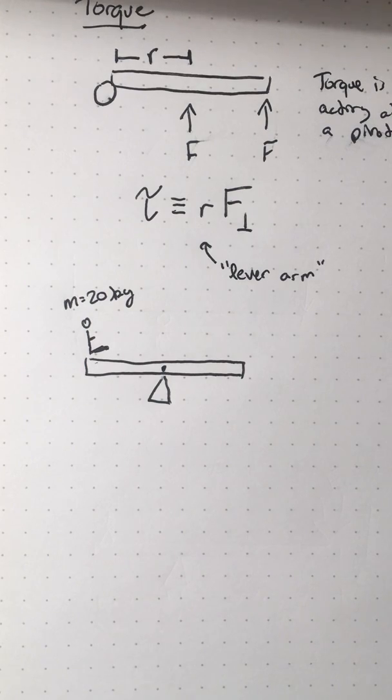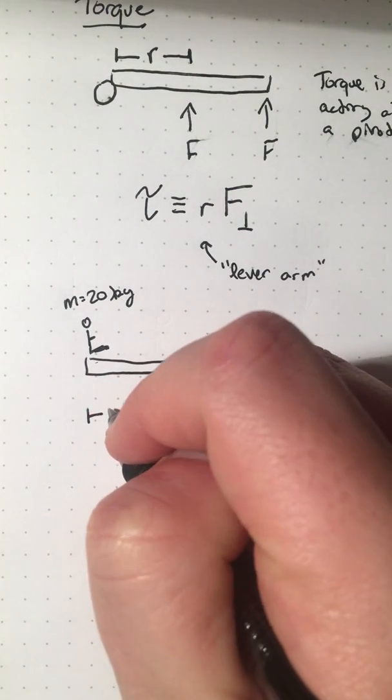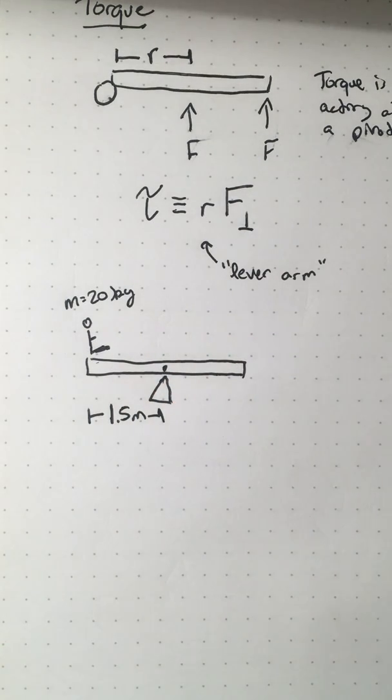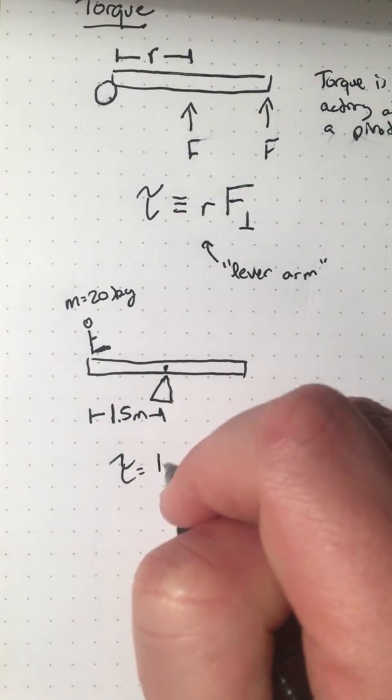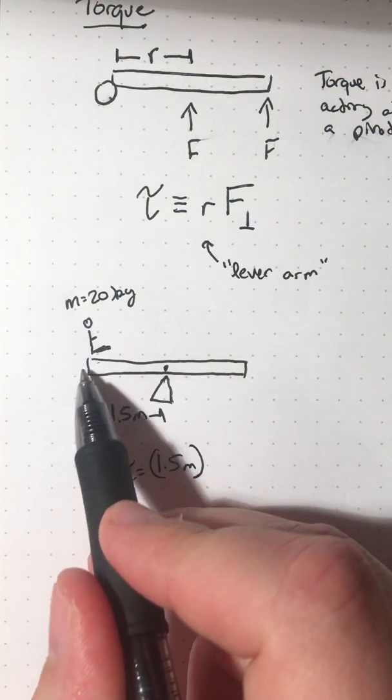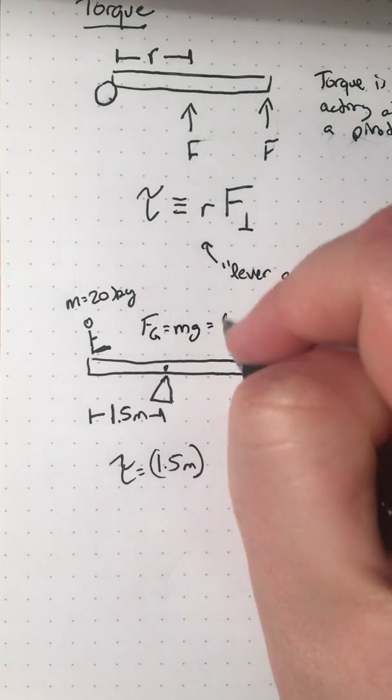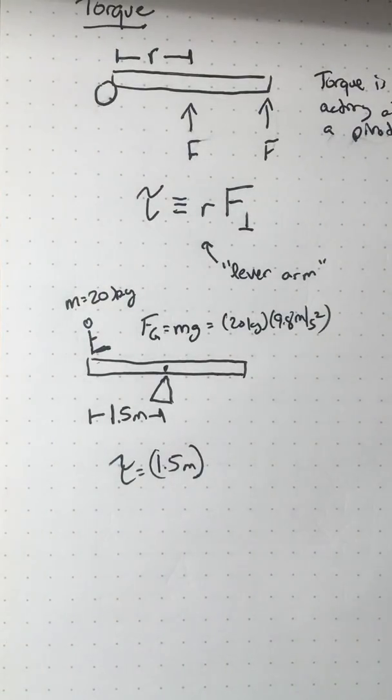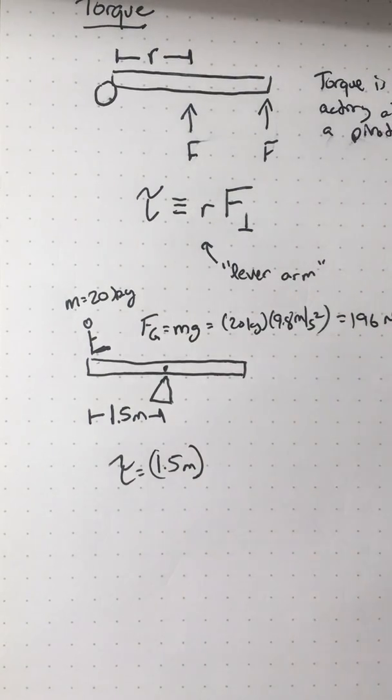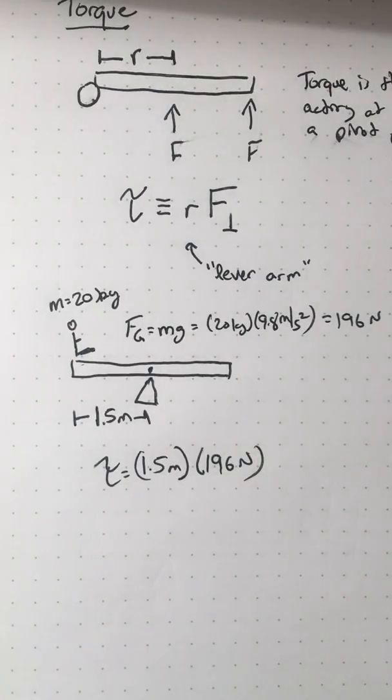And we're going to measure the torque from the fulcrum here that it's resting on. So I'm going to say that this kid is 1.5 meters away from there. So we've got a lever arm of 1.5 meters. Well, in that case, I could say the torque is 1.5 meters times its force. What force is this kid putting on it? Well, he's putting on the force of gravity. So this kid has a weight. His force of gravity would be, remember, mg. So it would be 20 kilograms times 9.8 meters per second squared. So I've got that being 196 newtons.